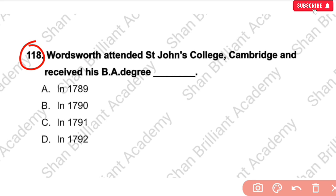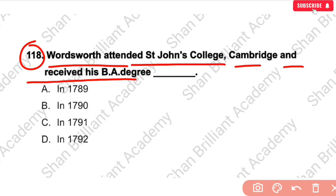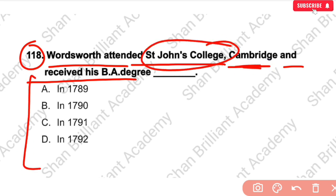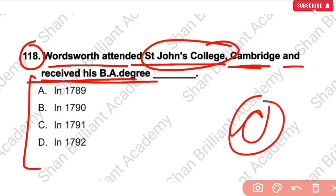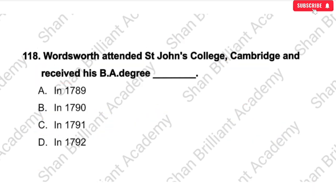MCQ No. 118: Wordsworth attended St. John's College, Cambridge and received his BA degree in — ? The correct answer is option number C — 1790. He received his BA degree in 1790.